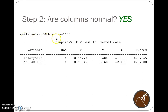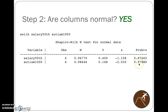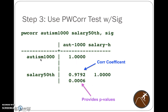We ran Shapiro-Wilk on salary 50th and autism per 1,000 — those were the variable names. We see salary 50th is not statistically different from normal. High p-values in this case indicate the data are normally distributed. High p-values for autism also indicate the data are normally distributed, not significantly different from normal. So we can go ahead and use the Pearson correlation test.